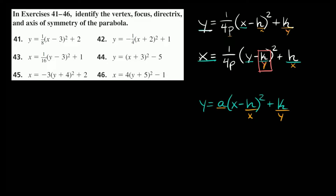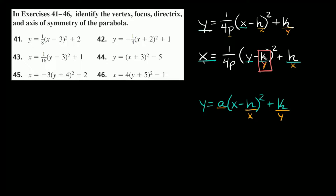The last thing to mention is which way the parabola faces. If you have y is equal to some equation, the parabola is going to either open up or down. What determines this is the number out front — if it's positive it opens up, and if it's negative it opens down. One way to remember: those shapes kind of look like y's. On the other hand, if you have an equation that starts with x is equal to all this, then your parabola is going to either open left or right.